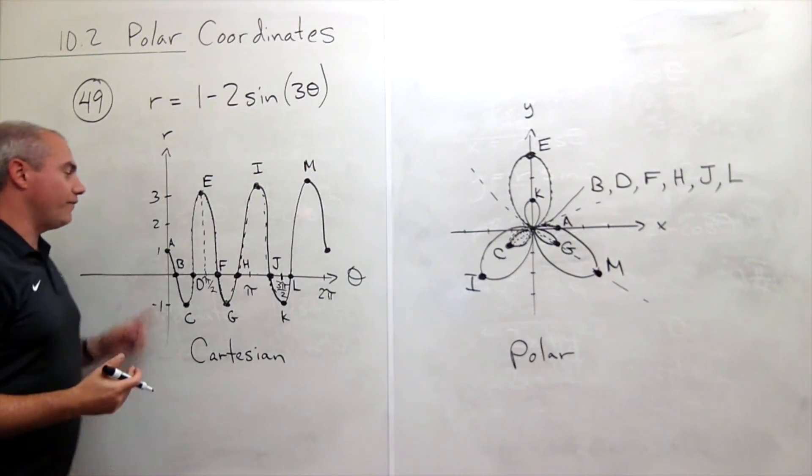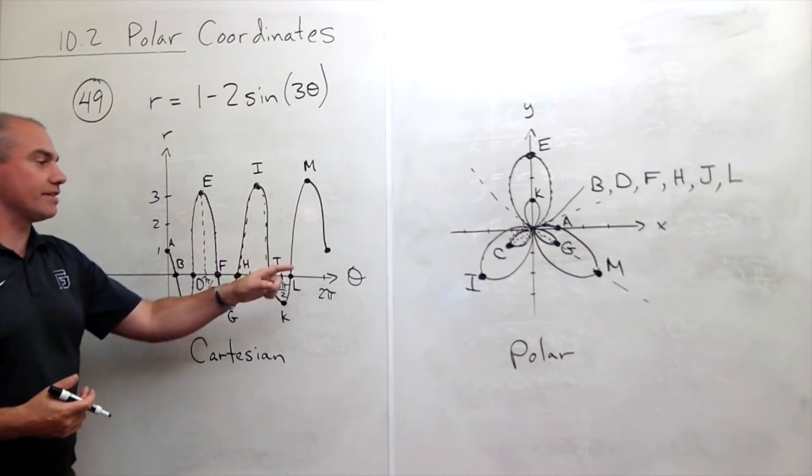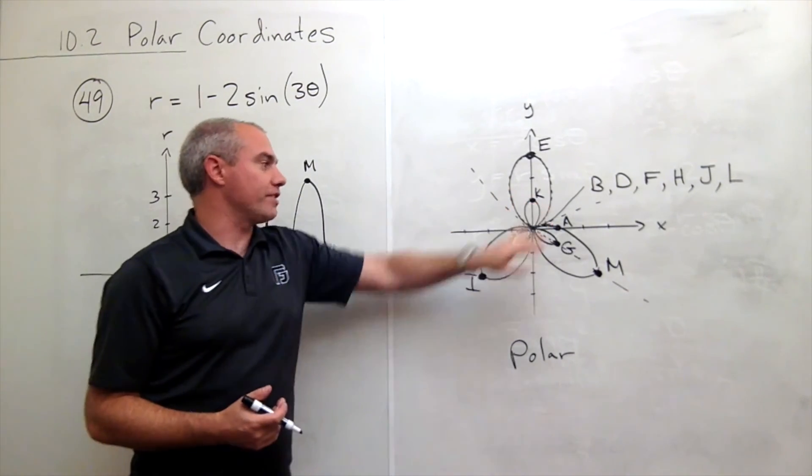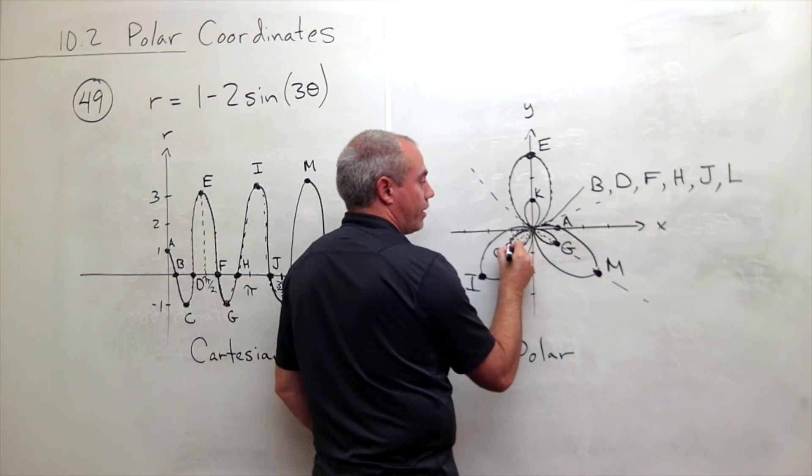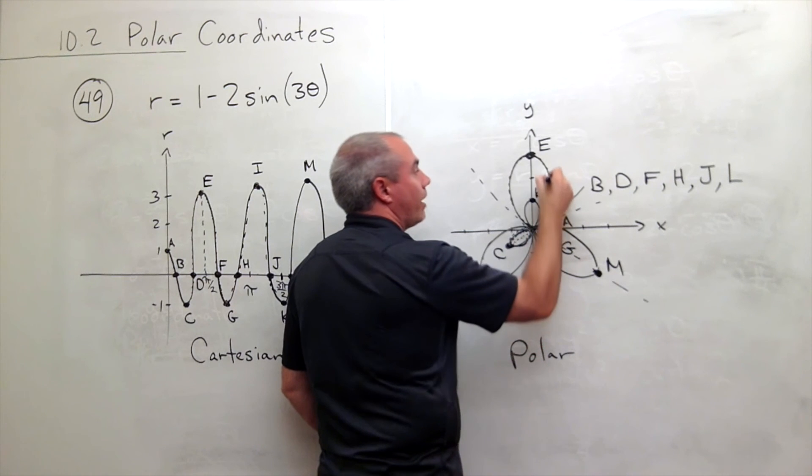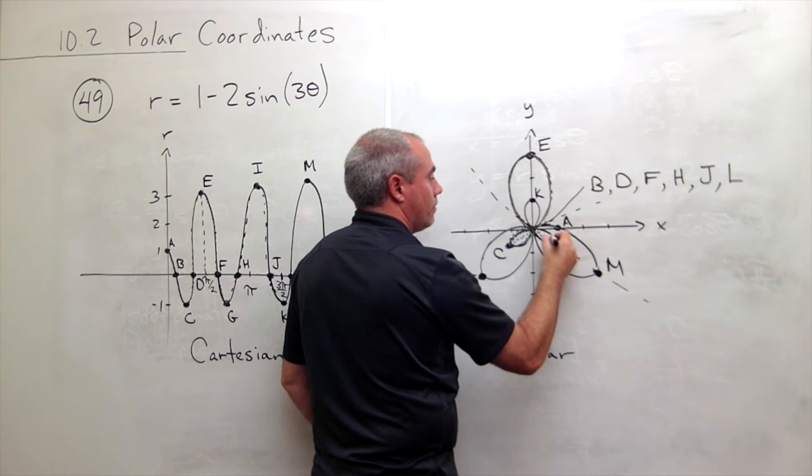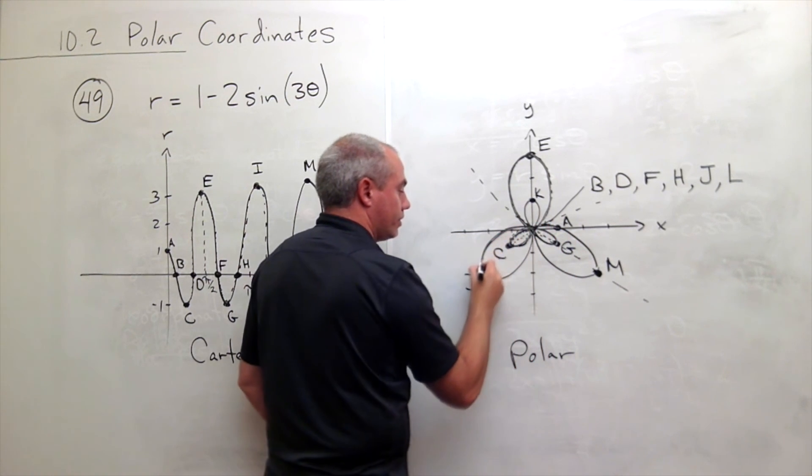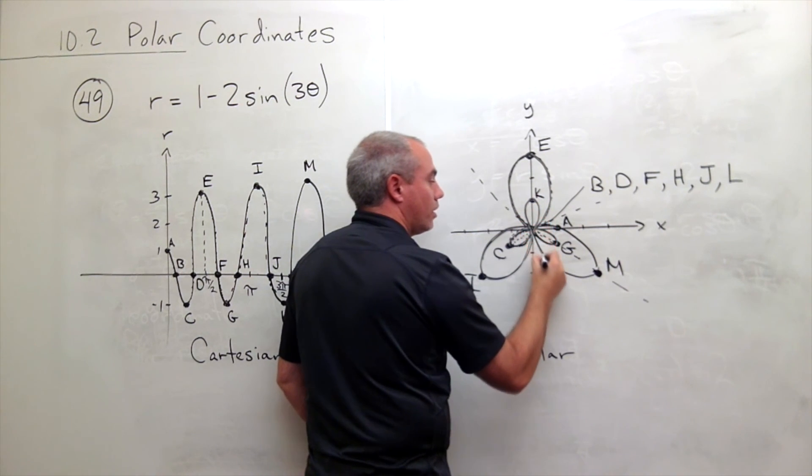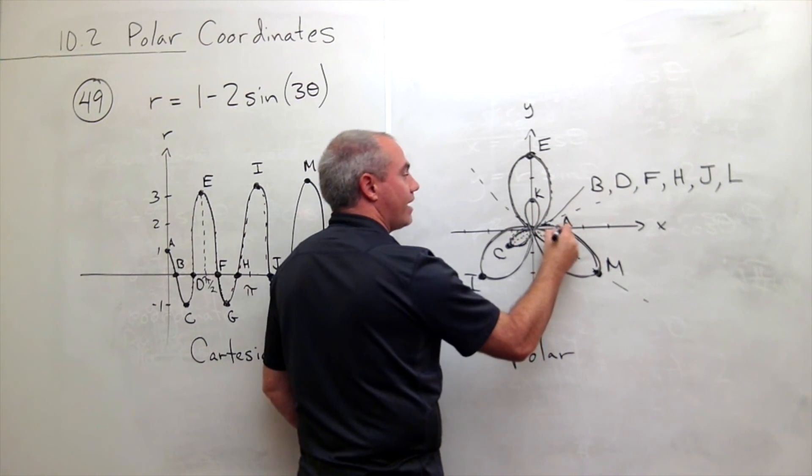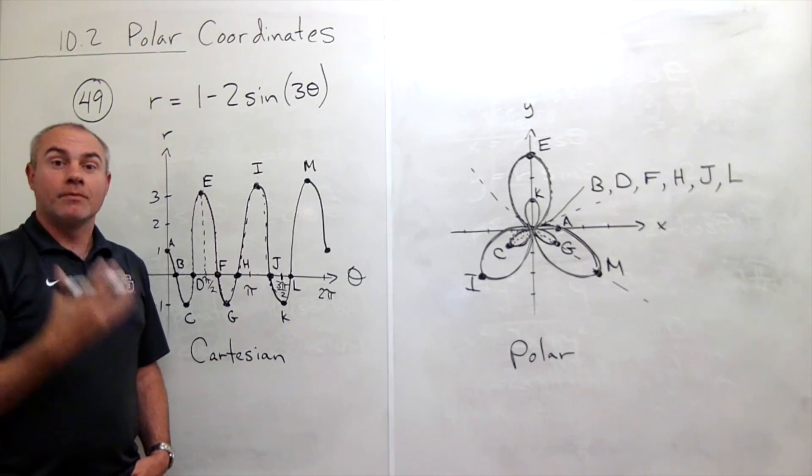So let's see if we can get a feel for, as this Cartesian function traces, what polar curve is getting drawn. It looks like this: we go here, here, all the way up here, back to the origin, over here, back here, around, up here, down, around, and back to a again at 2 pi, and that traces out my polar curve.